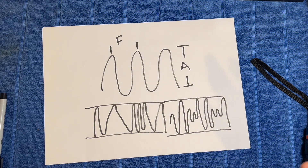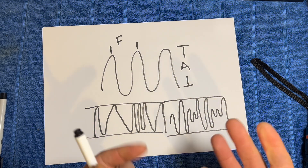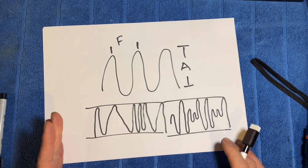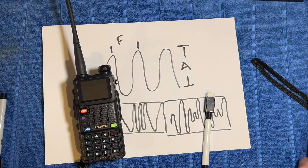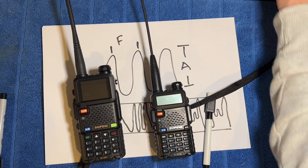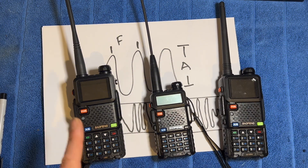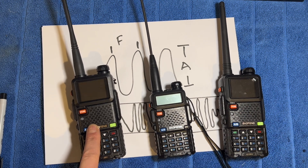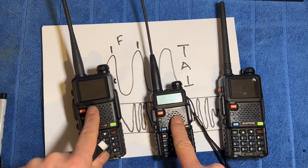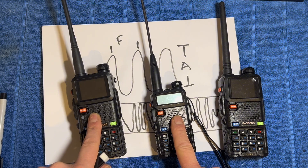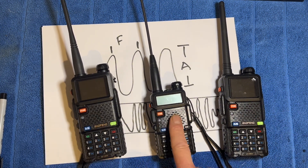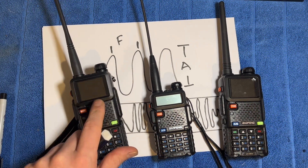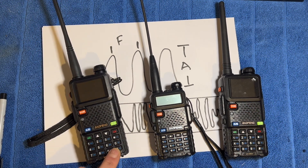There's a reason that aircraft use AM rather than FM, and the main one is something called capture effect. With FM radios, if two people talk at the same time, the strongest signal will overpower the weakest signal and that's all that will be heard. So if one signal is weaker and another is stronger, the listener will only hear the stronger transmission. That's how FM works.